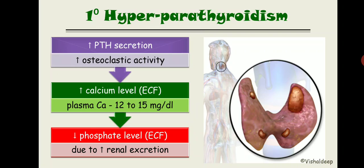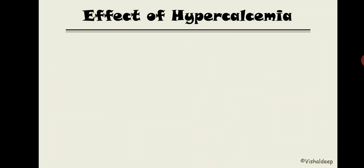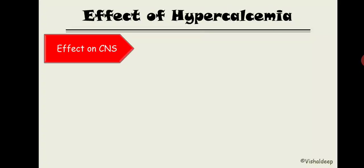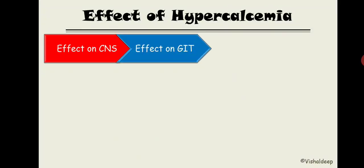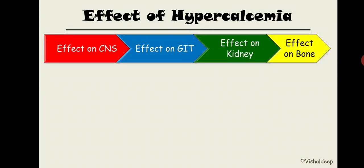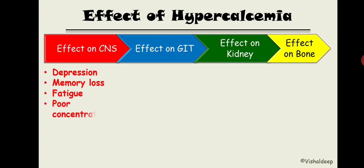The clinical features of hypercalcemia involve three main organs — bone, kidney, GIT — plus CNS. Effects on CNS include depression, memory loss, fatigue, and poor concentration, collectively known as 'psychiatric bones.' GIT effects include constipation, abdominal pain, peptic ulcer, and lack of appetite, collectively known as 'abdominal groans.'